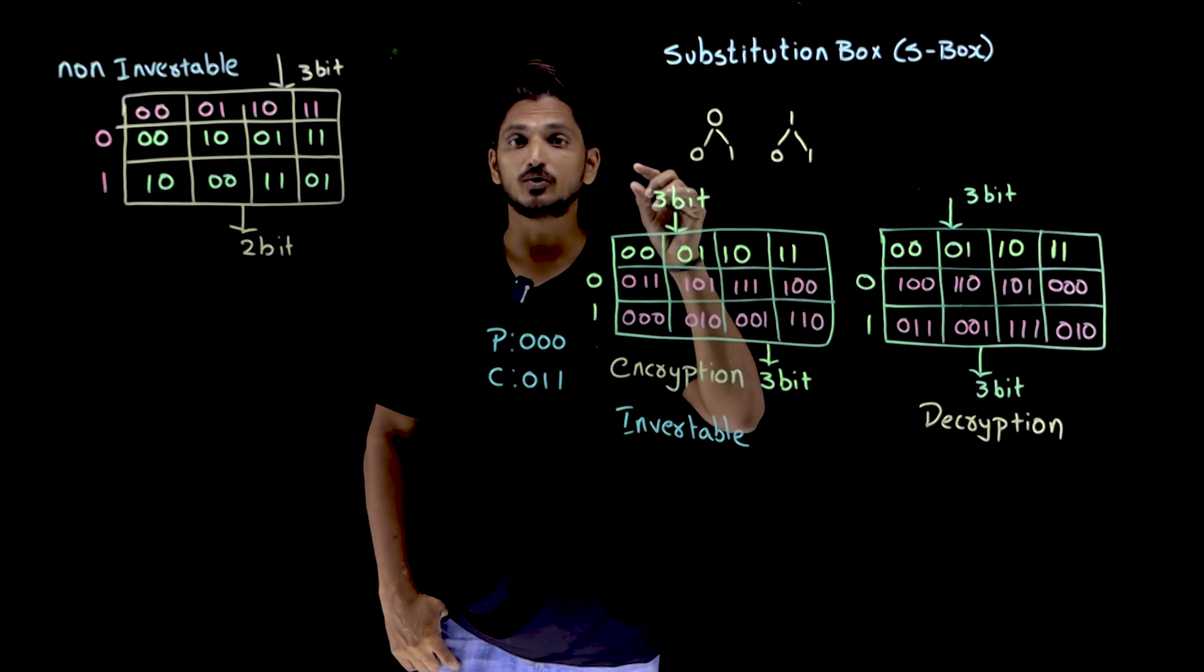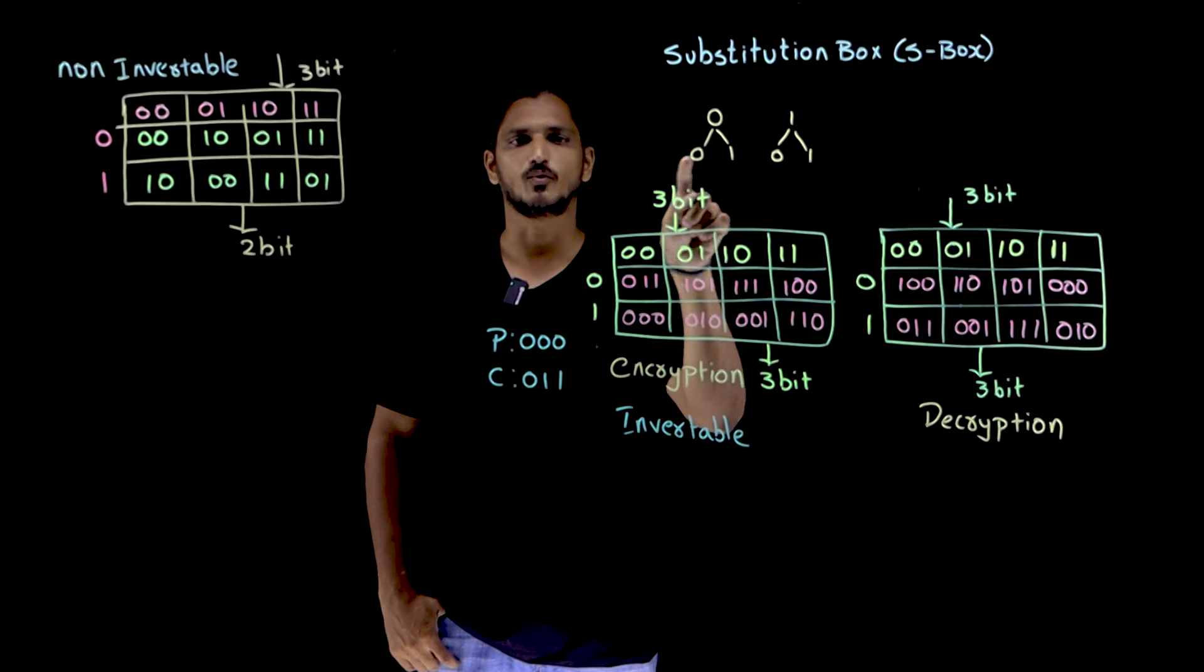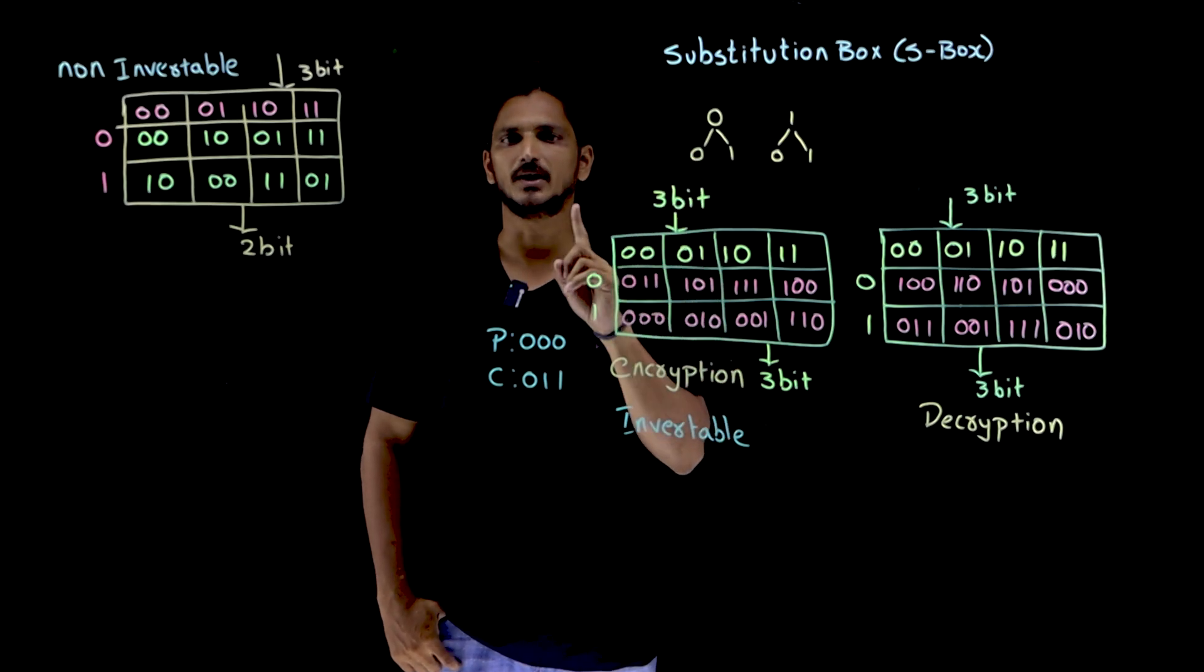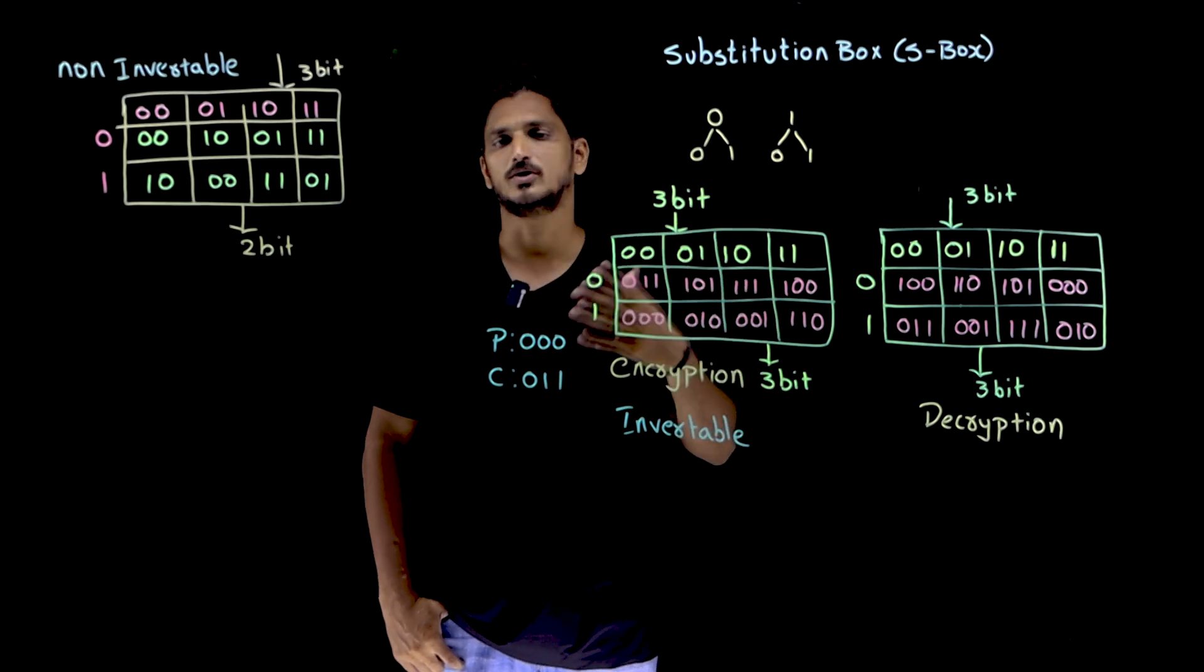But in substitution box, we have to substitute. In place of 0, we can substitute 0 or 1. You can substitute any one of the bits. In place of 1, you can substitute 0 or 1. This is what substitution box means.